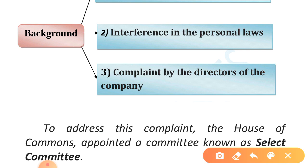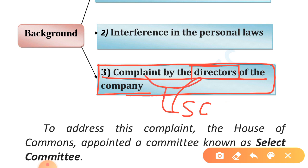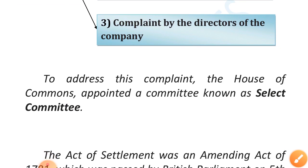Next point: complaint by the Directors of the Company. A complaint was made by the Directors of the Company against the Supreme Court, as it was difficult for them to run the administration. The Company's Directors were complaining that the Supreme Court was interfering in their work, causing difficulties in administration and preventing it from functioning properly.